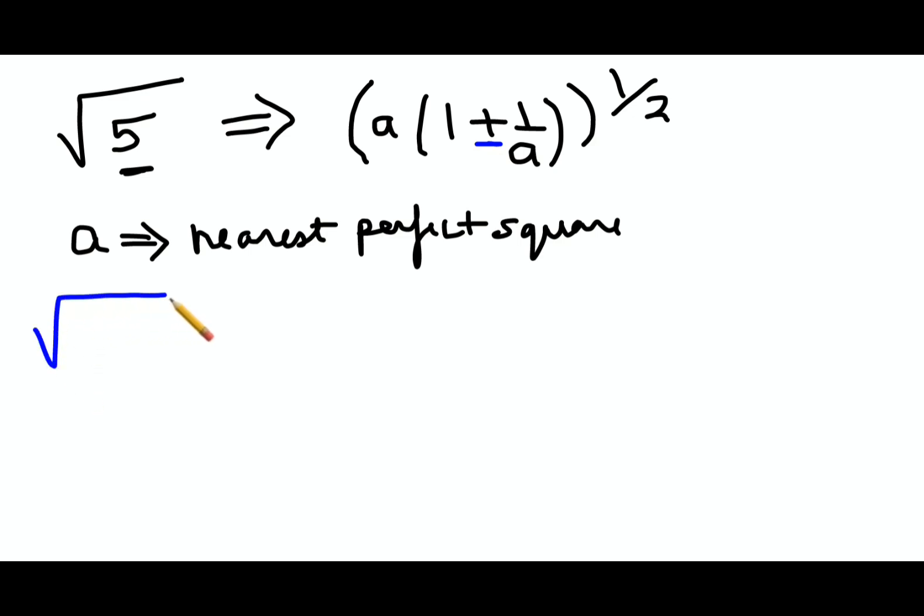Don't forget you can have a plus or minus in place. So instead of 5, I can write this as 4 plus 1, and using the same logic, I will write 4 is my perfect square. So what I will do, I'll take 4 out, and then in the bracket I'll have 1 plus 1 upon 4, the whole raised to half.